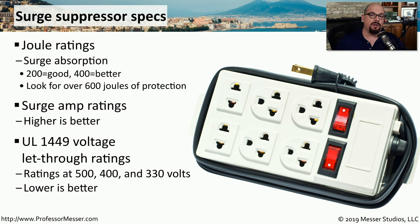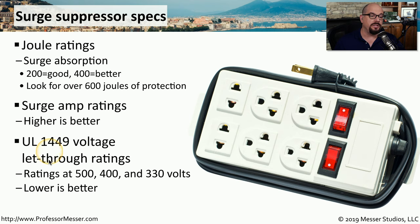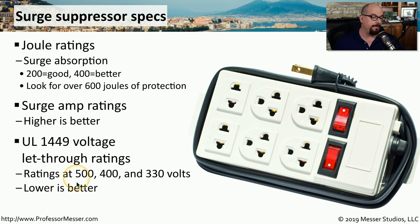There is also a set of categories from Underwriters Laboratories. UL1449 will categorize voltage let-through ratings, which show how much of the voltage gets through the suppressor. The different categories are around 500, 400, and 330 volts, where the lower amount of voltage let through indicates the better surge suppressor.